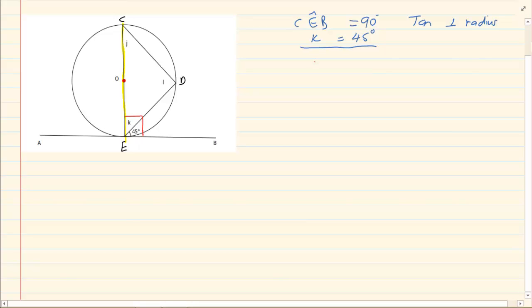Now if I've got a diameter, then I know D1 is equal to 90 degrees. Angle in a semi-circle. You could also say angle at center is twice angle at circumference because this is 180 degrees.